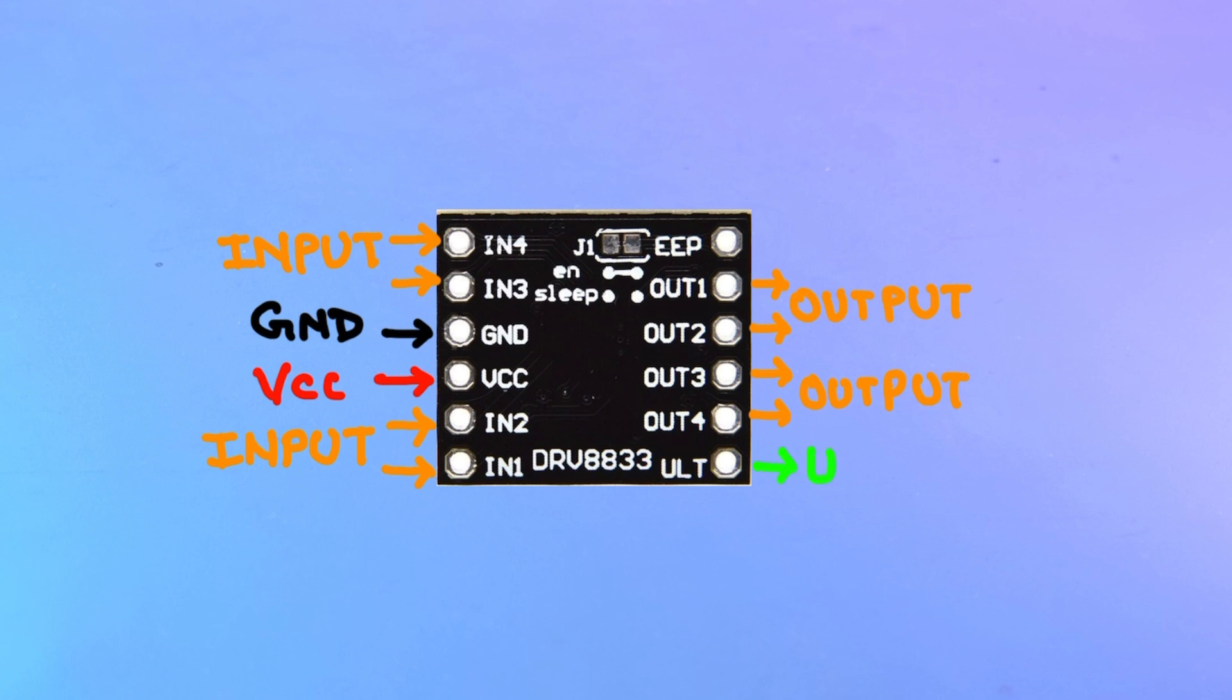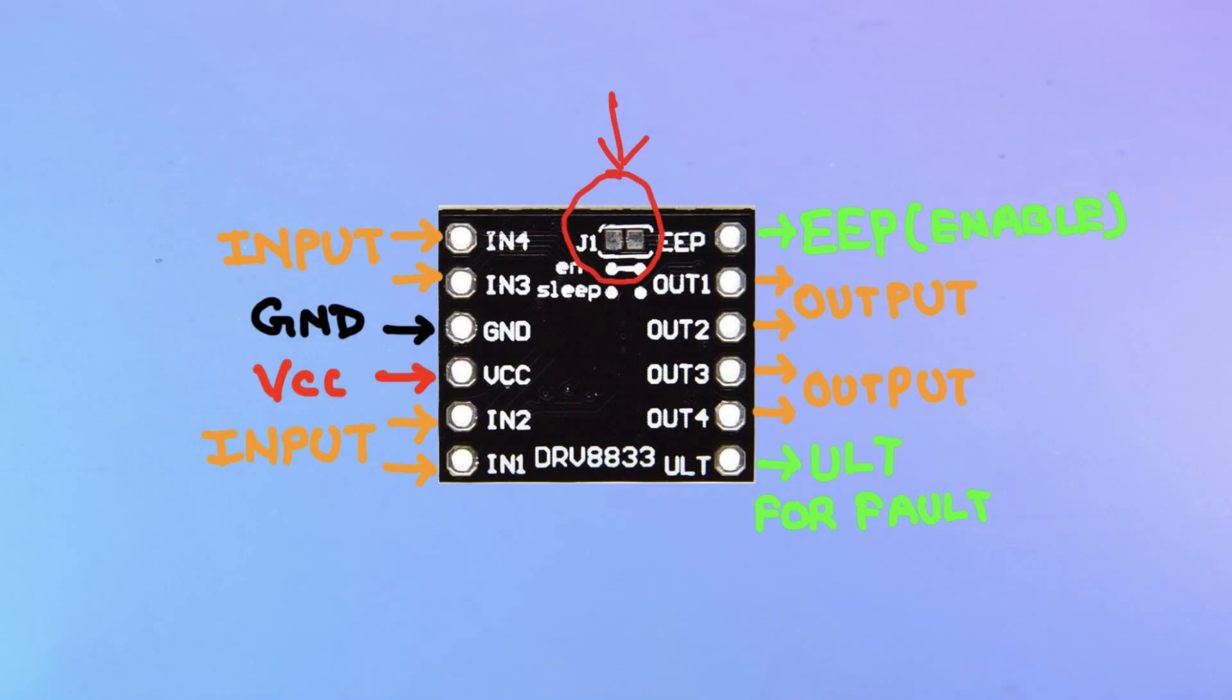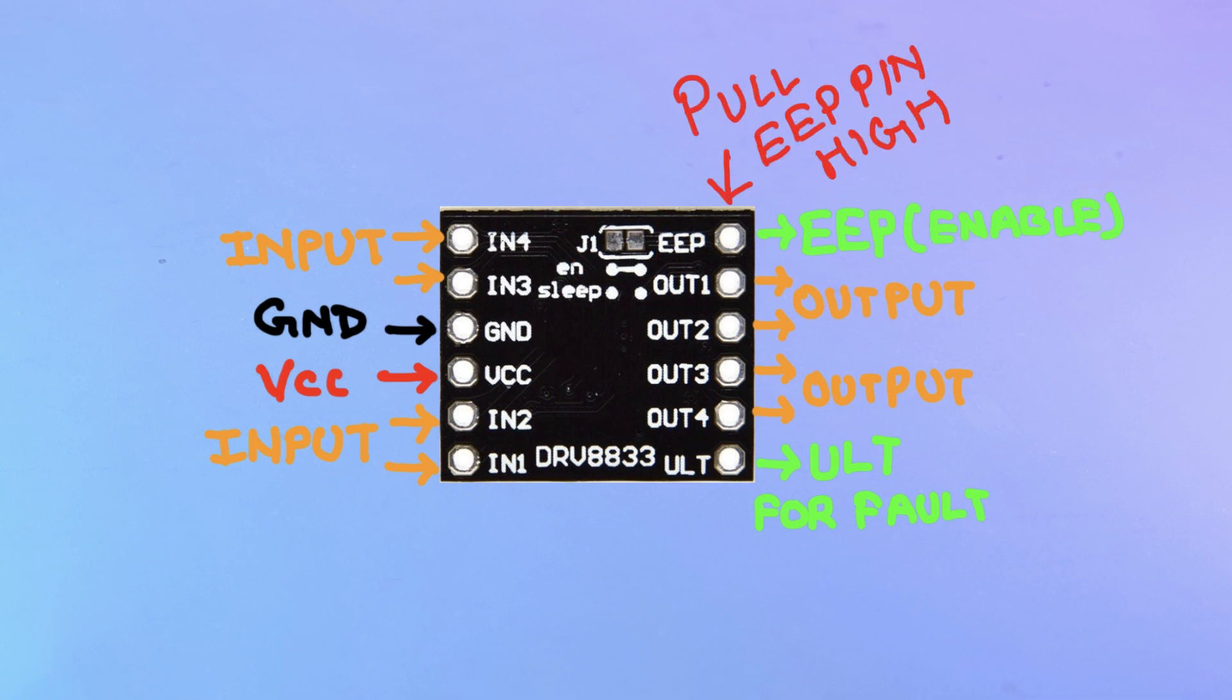Now we have a ULT pin which is low in fault conditions. And I am not gonna use the ULT pin in our project. And the last pin is very important and it is EEP. And it enables the motor driver. So either you should short circuit this shown jumper or you can pull the EEP pin to high. So we will pull the EEP pin to high.